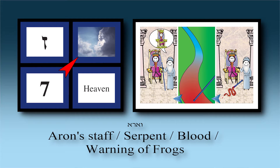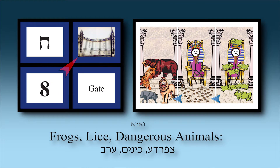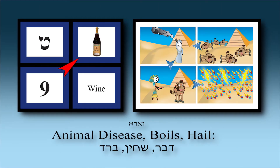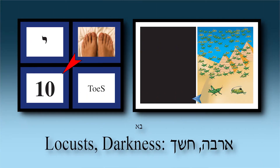Chapter eight gate: the Tzfardea came out, smashed down the gate, followed by the Kinim and the Arev — wild animals. Three Makkot: Tzfardea, Kinim, Arev. Chapter nine wine: animals were dying with red wine patches — that's Dever. The ashes came down, boils all over — Sh'chin, red like wine stains. And the Barad: only if hailstones hit the wine patches was the animal 'cured' — but it died in the process. Three Makkot: Dever, Sh'chin, Barad.